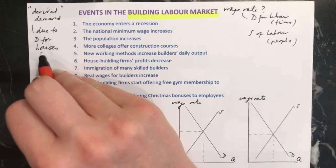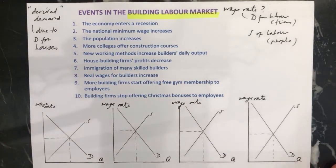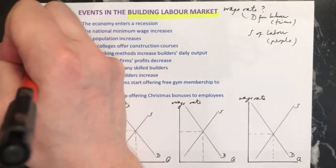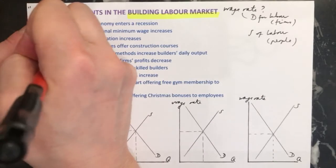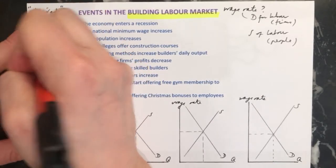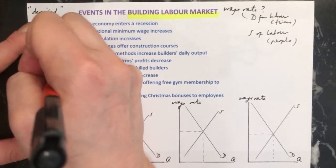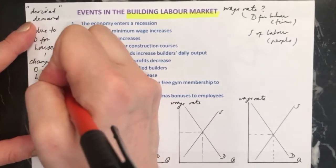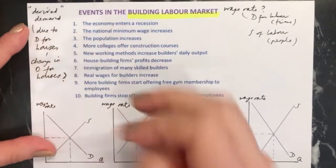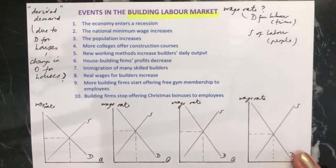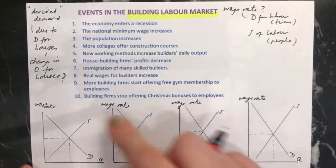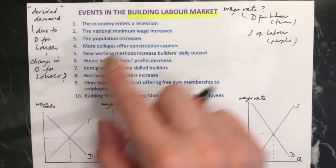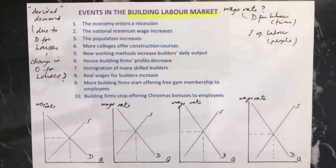Due to the demand for houses, that's why we're demanding this labour. Therefore, if there's a change in the demand for houses, then that's going to change the demand for labour in the labour market. So you need to be thinking about what's happening in the housing market and then that will affect what's happening in the labour market.